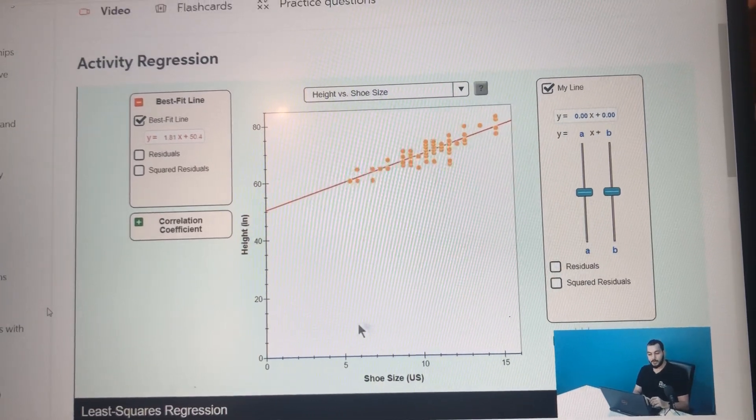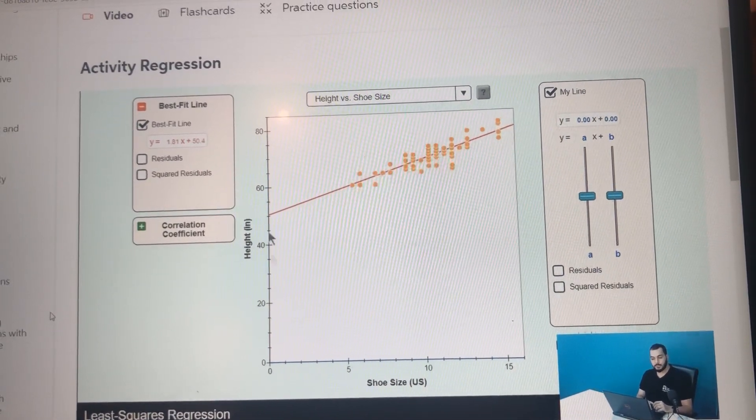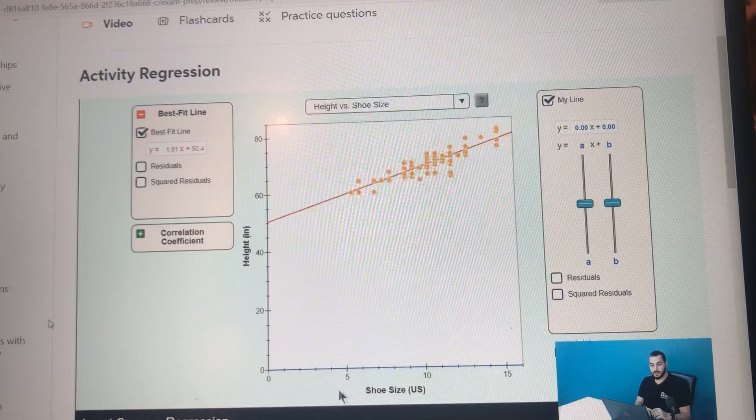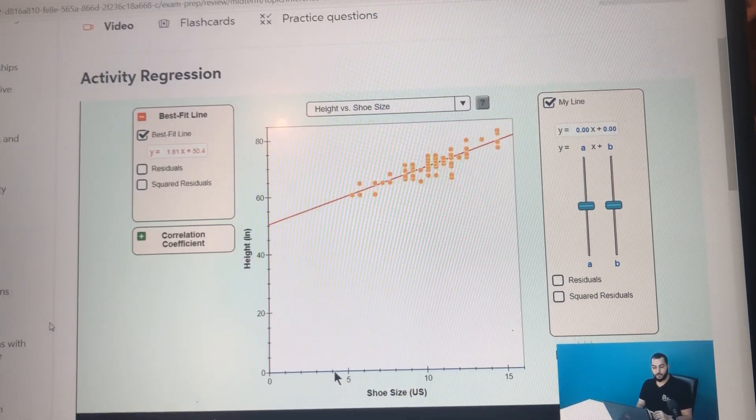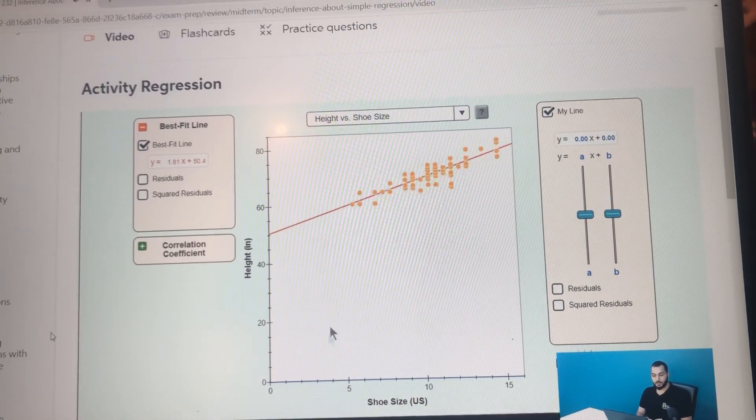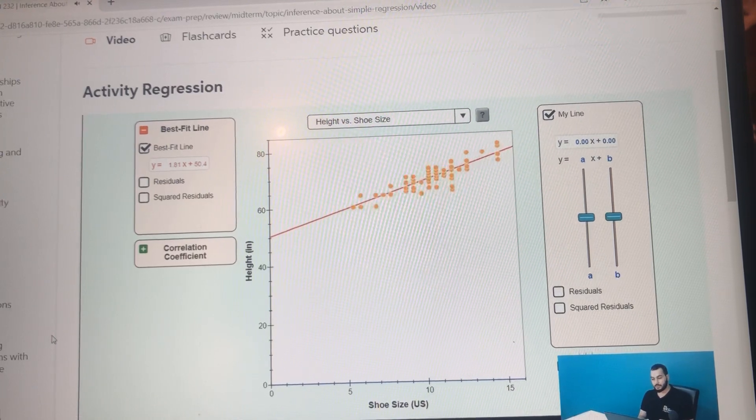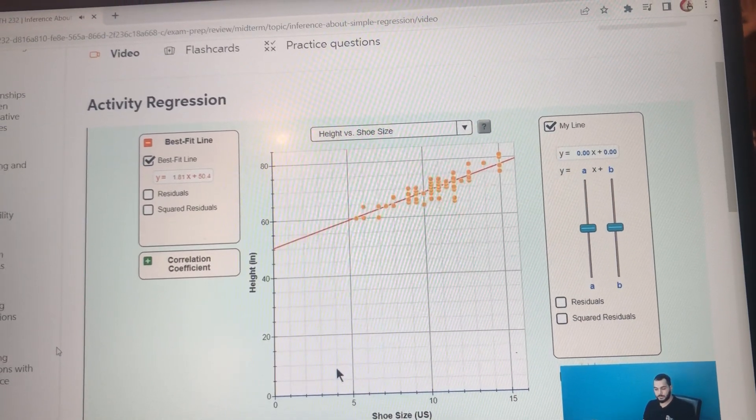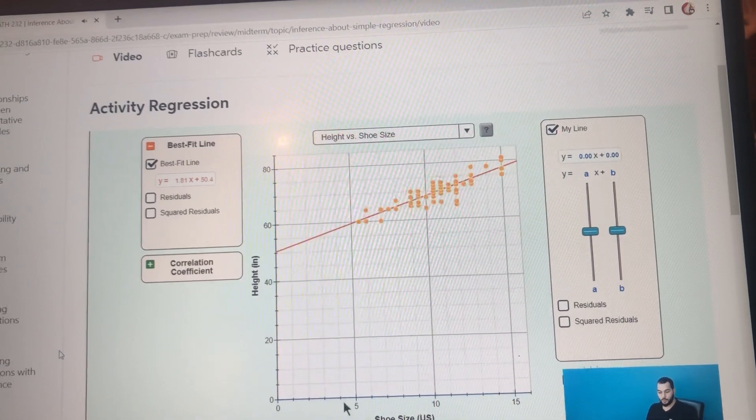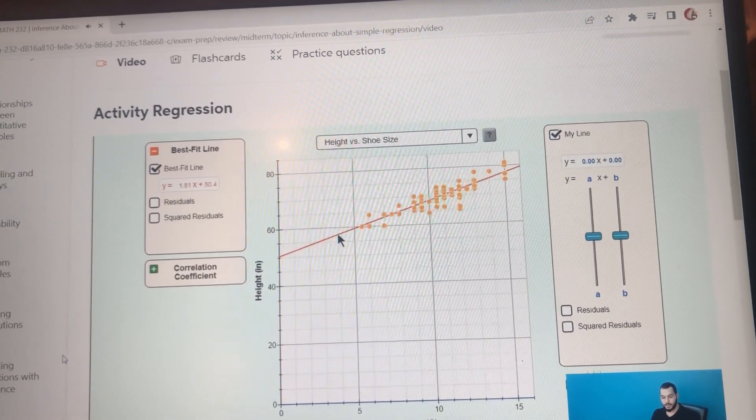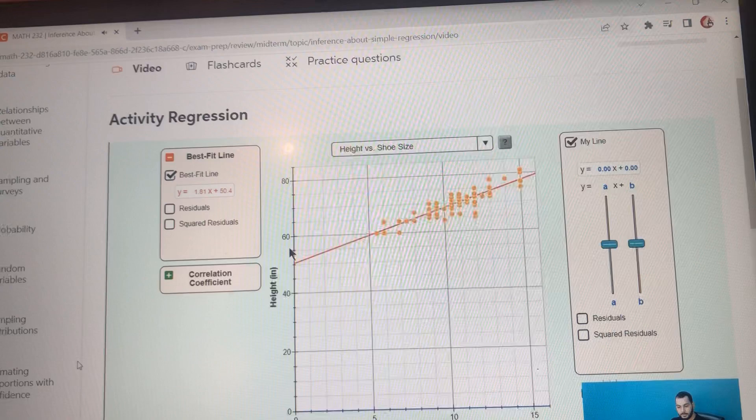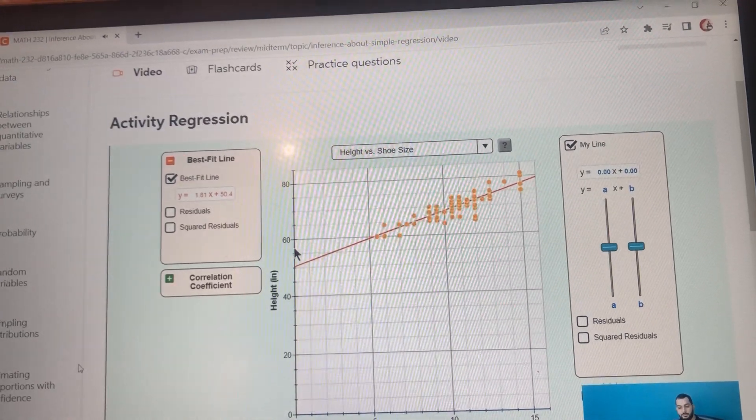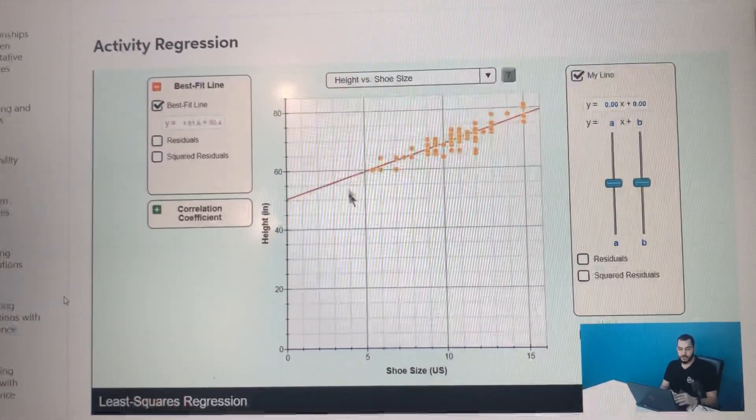From this graph we can tell what the height will be based on the shoe size. Let's say four. If the shoe size is four, let's choose the grid to make it more visually clear. So from here, at shoe size four, we can find out that the height is approximately 55. This is using the graph.